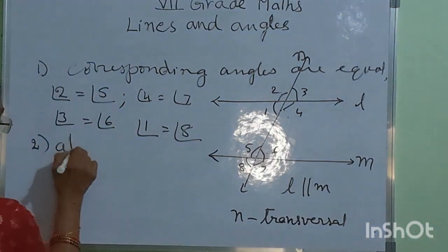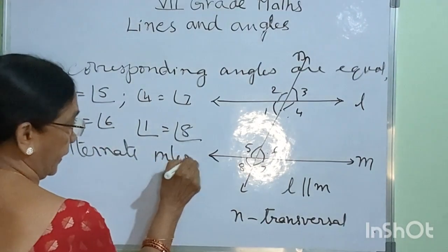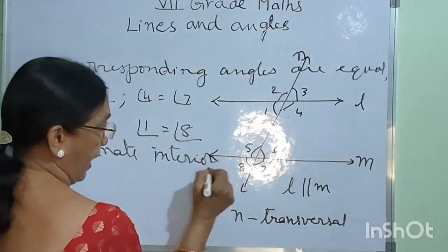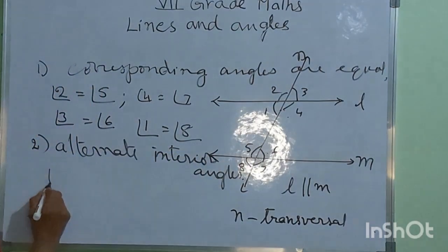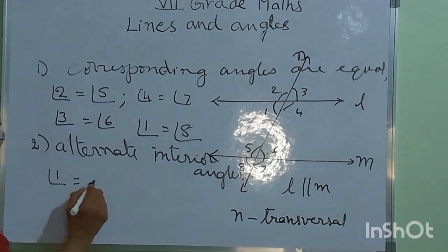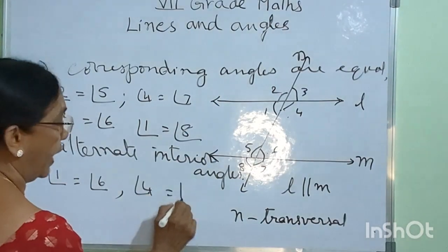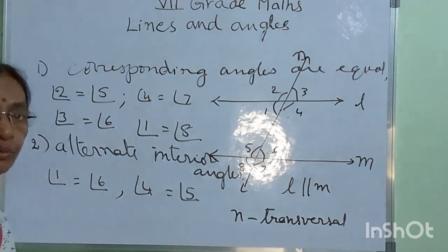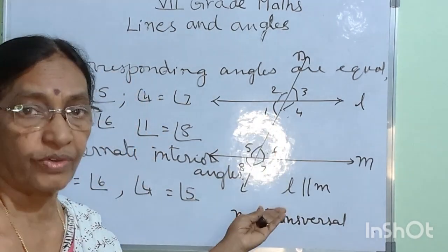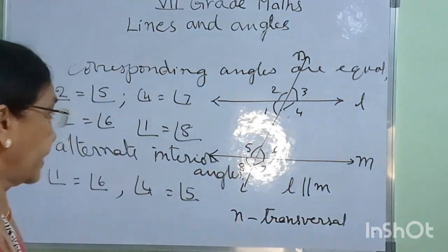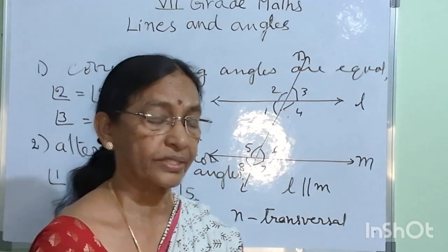Alternate interior angles. Alternate interior angles are equal. Angle 1 is equal to angle 6. Also angle 4 is equal to angle 5. So when two parallel lines are intersected by a transversal, the alternate interior angles are equal. Each pair of alternate interior angles are equal.